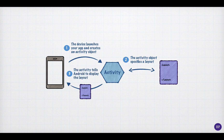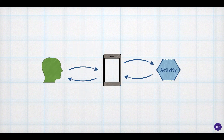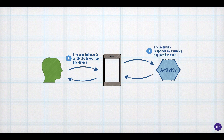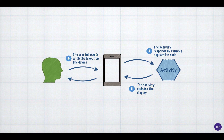Finally, the activity tells Android to display the layout. Once the screen has been displayed, the user can interact with the device. For example, there may be a button for the user to press. Pressing that button creates an event which is handled by the activity object. That does not mean the code that runs as a result is all in the activity object — it just means that the activity controls what code is called on a given event. Typically, a user event will cause some data in the application to be updated, and therefore the screen will have to be updated as well. Once the screen is updated, the user can see the result.